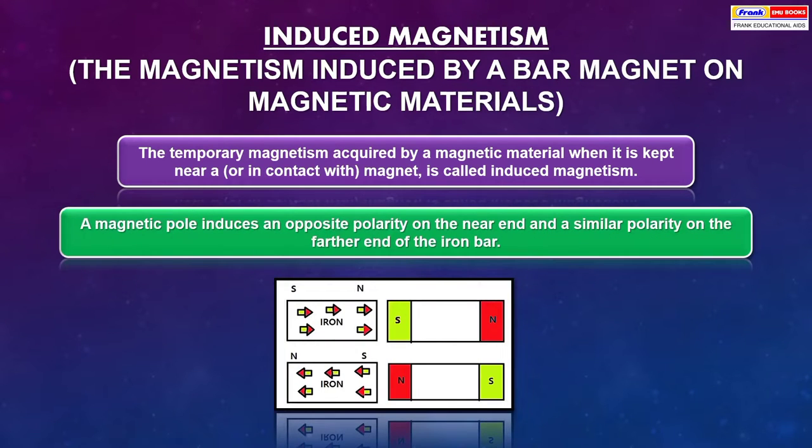A magnetic pole induces an opposite polarity on the near end and a similar polarity on the farther end of the iron bar.